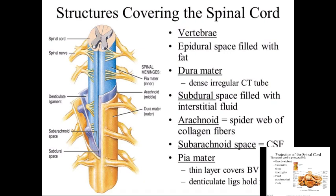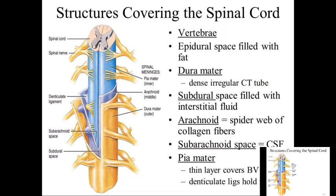We have connective tissue such as the meninges — and meningitis is inflammation of the meninges, sometimes bacterial, sometimes viral. The meninges come in three layers: pia mater, arachnoid, and dura mater. Fluid surrounds the spinal cord and circulates in the subarachnoid space — that's the CSF, cerebral spinal fluid. The CSF is produced by the ependymal cells, one of the six neuroglial cells.